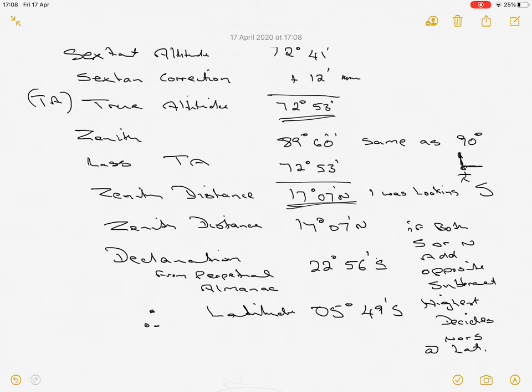So we take our 72 degrees 41, which we read off the side of the sextant. We then make our correction and we end up with a true altitude of 72 degrees 53 minutes. Now remember, I had to work out that 17.7. How did I get that number?